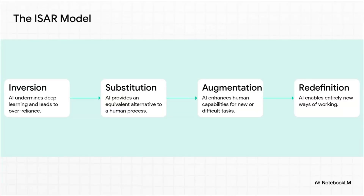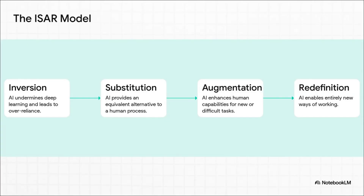First, you've got inversion — the negative one, where AI actually gets in the way of learning. Then there's substitution, where AI just replaces a human process. Then augmentation, where it boosts our skills. And finally, redefinition, where it creates totally new ways of working we haven't even thought of yet.